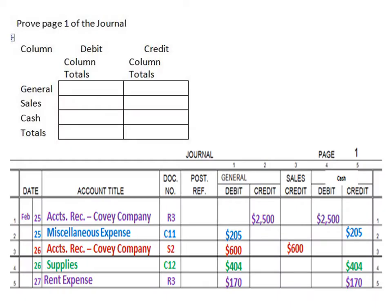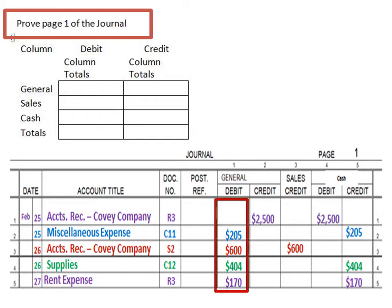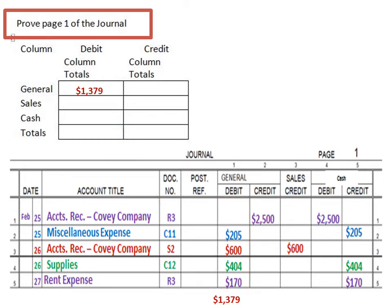Let's take a look at proving a journal. I've got a sample journal page up here filled out. What we want to do — if you notice in the upper left-hand corner — is we want to prove page 1 of the journal. We're going to take our general debit column, add them all together, and in this case we get $13.79. We'll put that number into the general debit column totals. Then we'll continue the same process for the general credit column total — add them all together and put it in the general credit column totals as well.